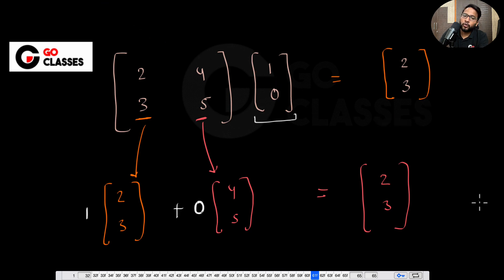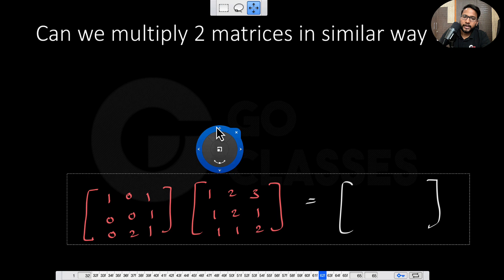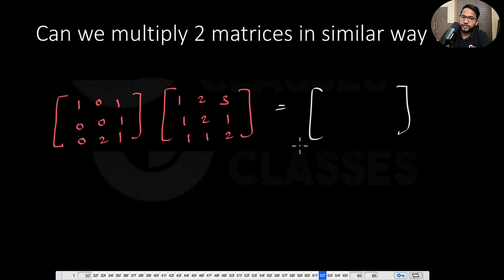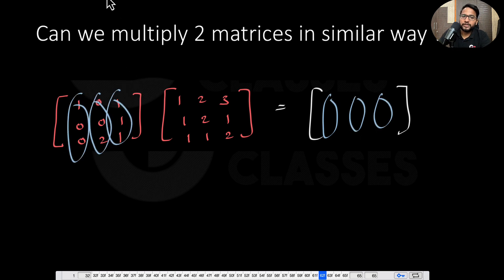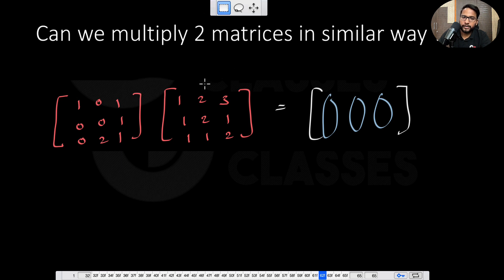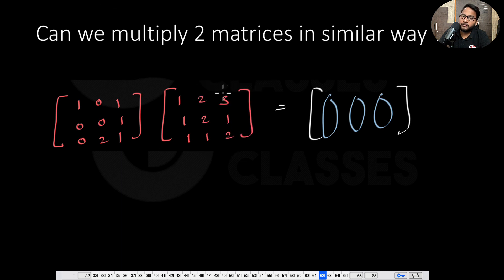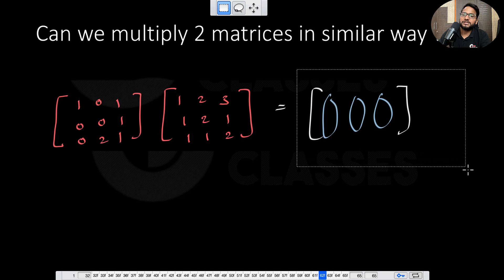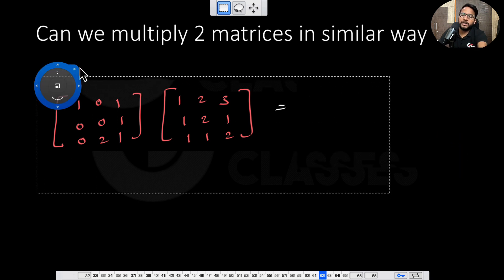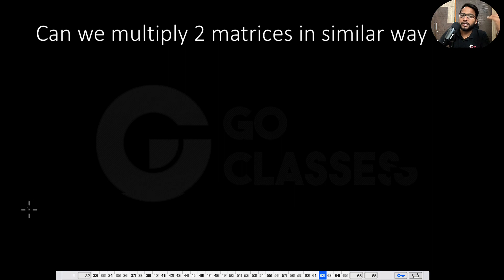Now let's see if we can multiply two matrices in the same way. If we are given any two matrices, can we get the columns of the result as a linear combination of the columns of the first matrix? If the second operand were just one vector, you could definitely do it. But if instead it is multiple vectors — a full matrix — can you do the same? The question is: can we multiply two matrices in the same way we did matrix-vector multiplication?